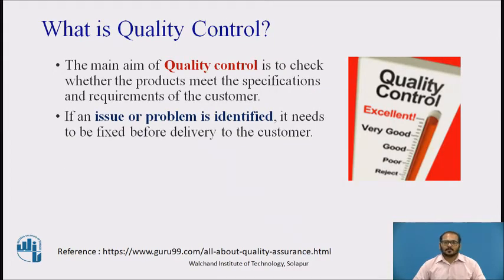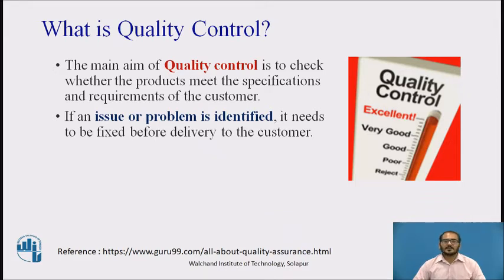Quality control, popularly abbreviated as QC, is a software engineering process used to ensure quality in a product or service. It does not deal with the processes used to create a product; rather, it examines the quality of end products and final outcomes. The main aim of quality control is to check whether the product meets the specifications and requirements of the customer. If an issue or problem is identified, it needs to be fixed before delivery. Quality control also evaluates people on their quality level and skill sets, and imparts training and certifications.